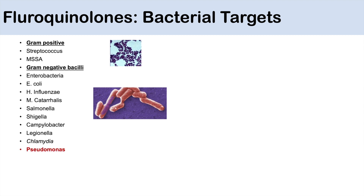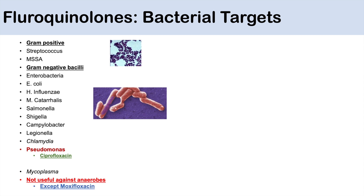Additional targets include Chlamydia and Pseudomonas — in particular, Ciprofloxacin is used for Pseudomonas coverage out of all the fluoroquinolones. Fluoroquinolones also have some activity against Mycoplasma, but they are not very useful against anaerobes, except in the case of moxifloxacin, which is a fourth-generation fluoroquinolone.